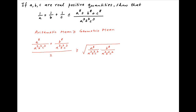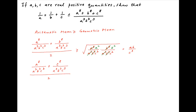The right-hand side simplifies to the square root of a² times b² divided by c⁶, which equals ab upon c³. Similarly, a raised to the power 8 upon a³b³c³ plus c raised to the power 8 upon a³b³c³, divided by 2, is greater than or equal to ac upon b³.